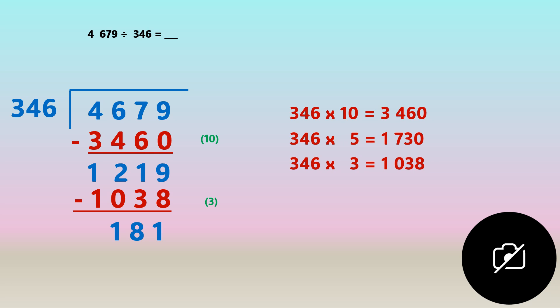We estimate and guess again, but we cannot multiply any further because one hundred and eighty one is less than three hundred and forty six, so no number is going to go into that. We add up all the green numbers and we're left with thirteen, and our remainder is one hundred and eighty one. We write that at the top where the quotient is. Our answer is thirteen remainder one hundred and eighty one. What most children do is write thirteen and forget the remainder — please make sure you write the remainder in the quotient as well. The remainder must always be less than the divisor.